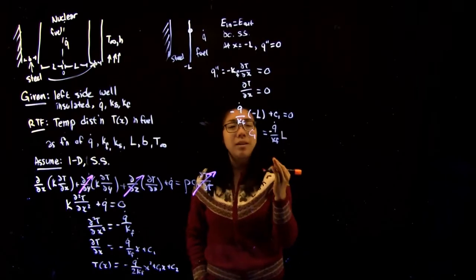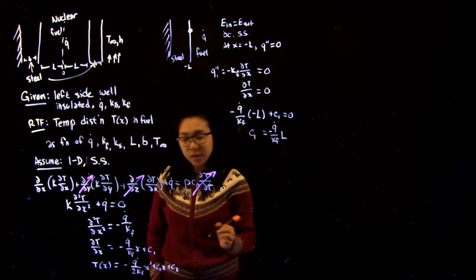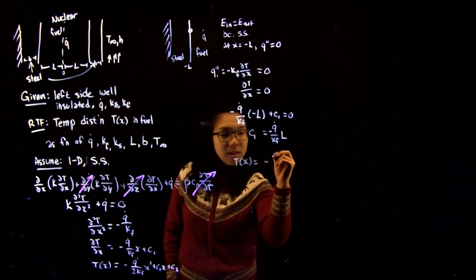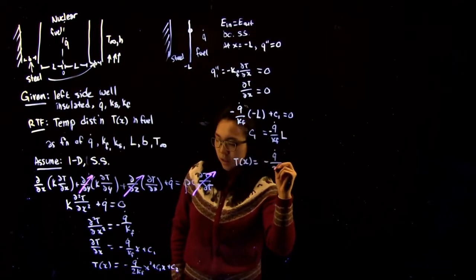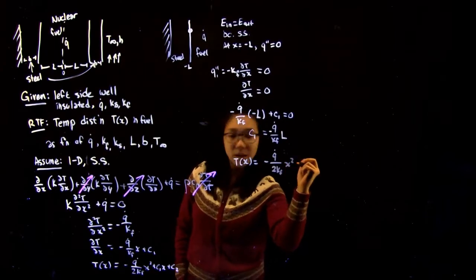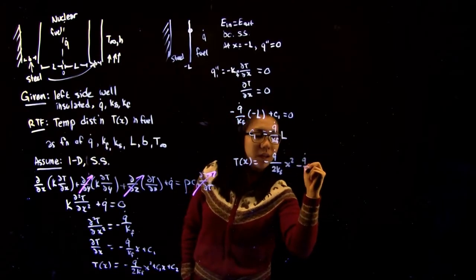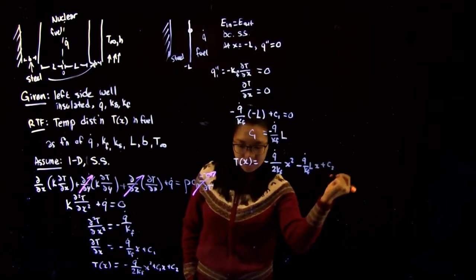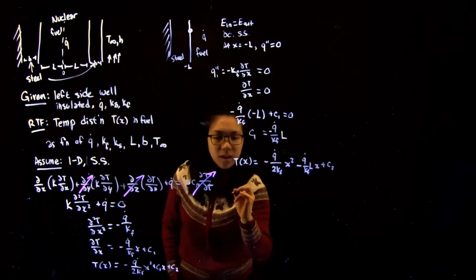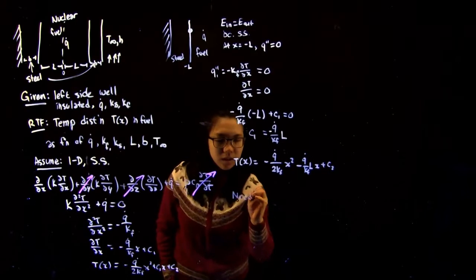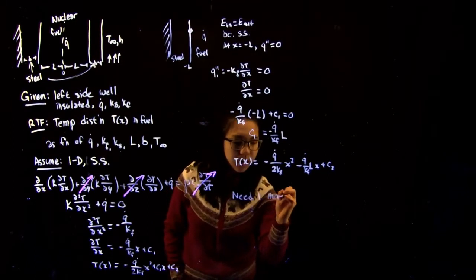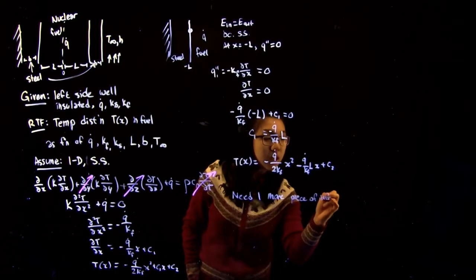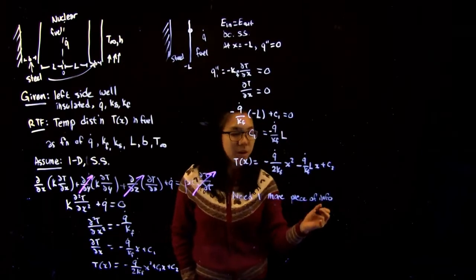Now we substitute C1 into our full temperature profile, giving: T(x) = −(q/2k_f)x² − (q/k_f)·L·x + C2. We still need one more piece of information to solve for the remaining constant C2.